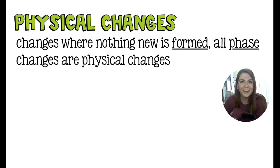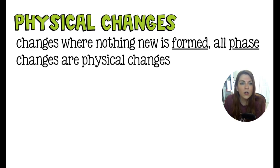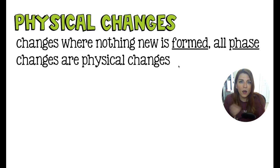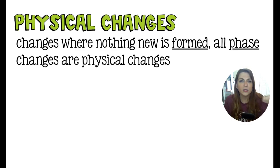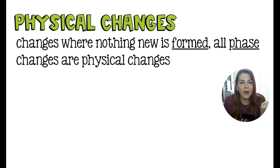If properties are adjectives, then physical and chemical changes are verbs. A physical change is where a change is made but nothing new is formed — we're not breaking or forming bonds. All phase changes are physical changes. So if we think of boiling or freezing water, on the other side of that process, water is still water — it might just be ice or steam — but it's going to change from one form to another and still be water, and that's the important piece here.